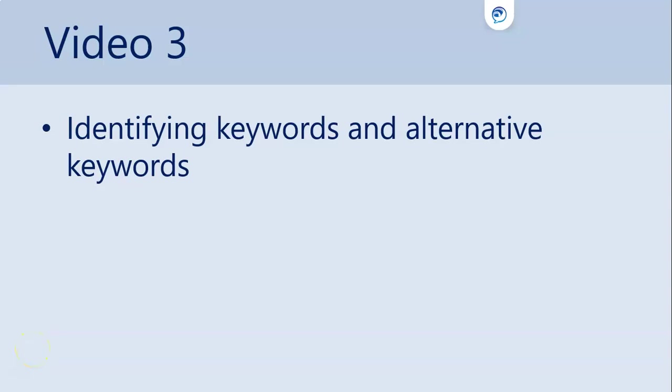Welcome back to this third video in the series. In the last video, we looked at the search cycle and the different stages you need to work through in order to do a comprehensive literature search. In this video, we'll look at the start of that search cycle: identifying your keywords and alternative keywords.